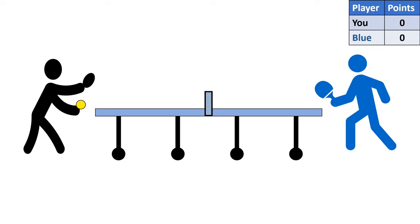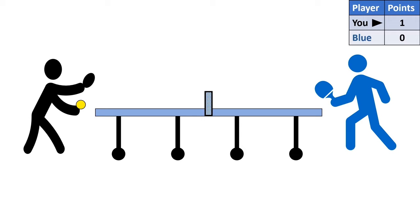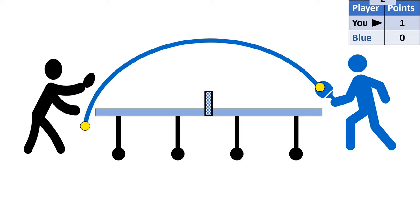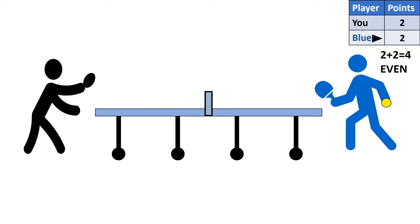For scoring: you serve for two points, then the serve changes. So if you're in the black uniform with the ball, you serve, win a point, serve again, win again — that's two points. Then serve goes to the blue player. You can figure out when to change serve by adding both players' points: whenever the sum is even (2, 4, 6, 8, 10...), the serve changes.